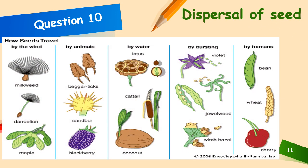Seeds travel by wind — milkweed, dandelion and maple. By animals — beggar's ticks, sandbur and blackberry. By water — lotus, cattail and coconut. By bursting — violet, jewelweed and witch hazel. By humans — beans, wheat and cherry. The dispersal of seeds refers to the process by which plants spread their seeds away from the parent plant to increase the chances of successful germination and growth. It is an essential mechanism for plants to colonize new areas and ensure genetic diversity within populations.